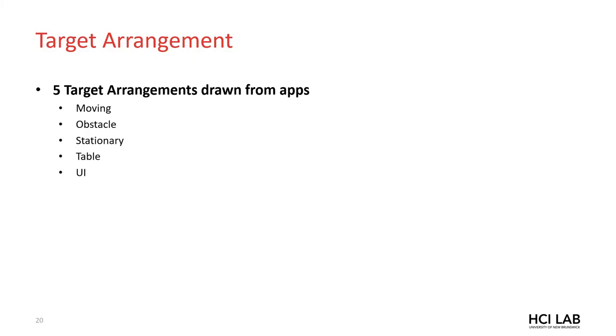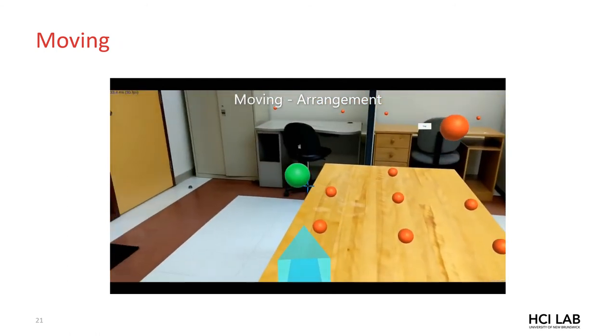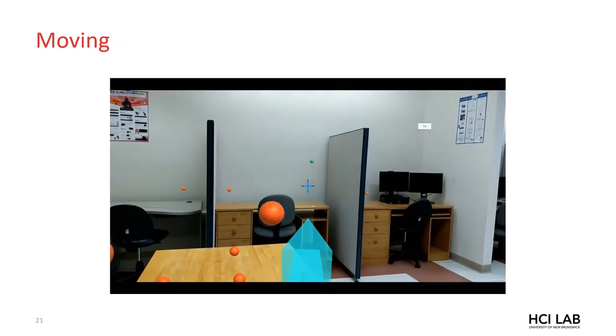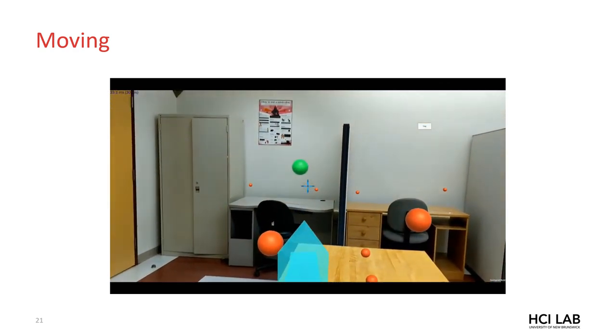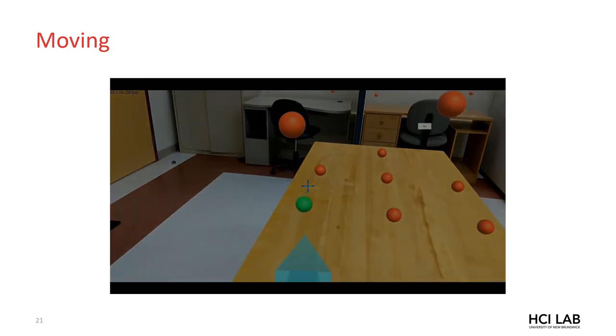In our experiment, we were also interested in understanding how the techniques would perform under different representative targeting scenarios. Our five target arrangements were developed based on a quick look at a selection of mobile AR apps on the Google Play Store. We'll now look at the five targeting scenarios in turn. In the moving target arrangement, targets are moving around in a pseudo random pattern from a starting point. This mimics targets that are frequently seen in AR games.